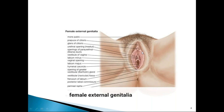Labia minora have an outer and inner surface, the inner surface being divided into lateral and medial by the Hart's line. The area between the two labia minora is called the vestibule, which has six openings: the urethral opening, external urethral meatus, hymen, two Bartholin glands at five o'clock and seven o'clock positions, and para-urethral glands. The area above the fourchette and below the hymen is called the fossa navicularis.